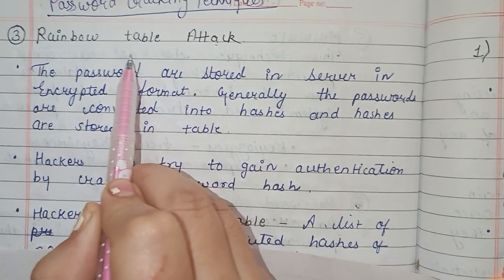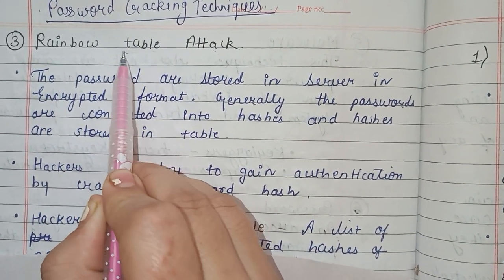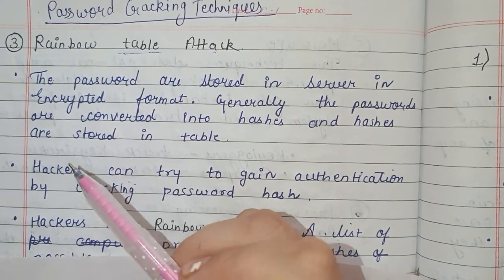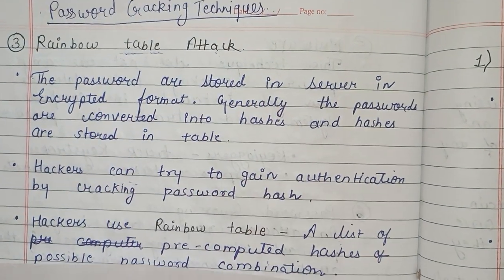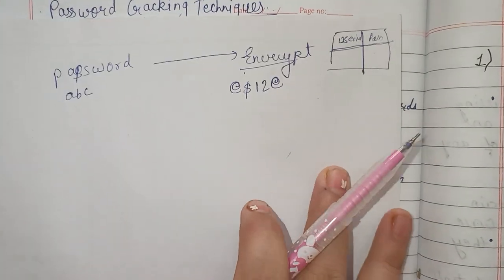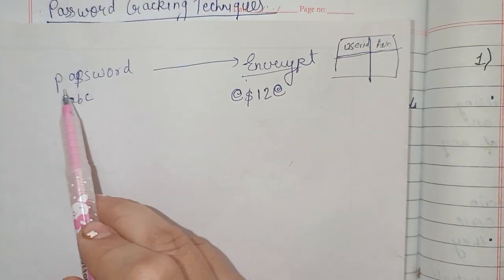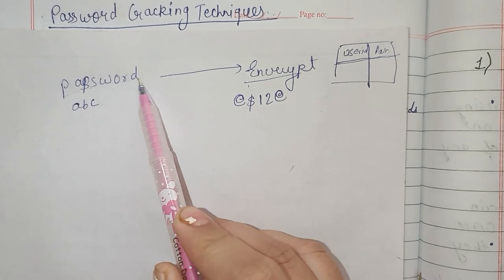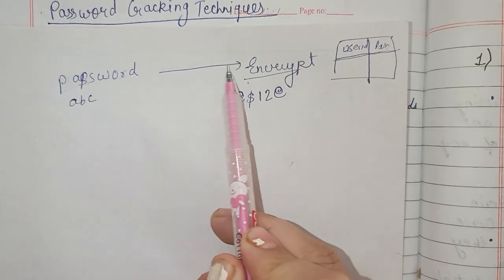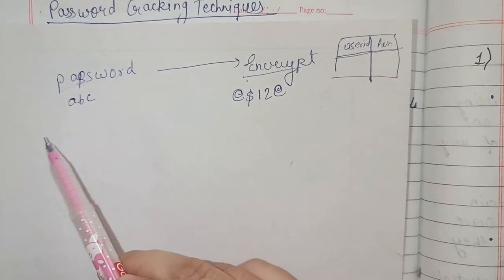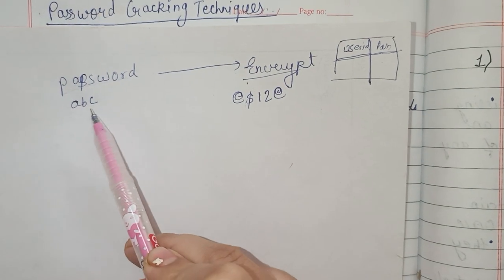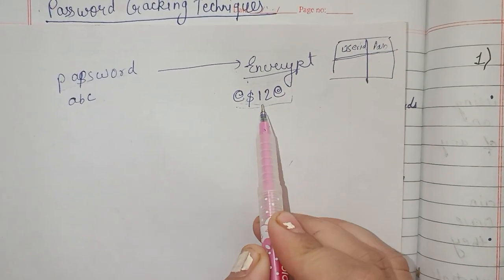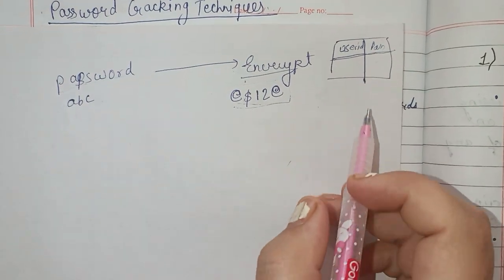In this technique, you can see that a table is used — there is definitely a table in this technique. We will understand which table. Generally, the password is stored on the server in encrypted format. For example, if the password is 'ABC', it will be converted into a non-readable format and then stored in the table.